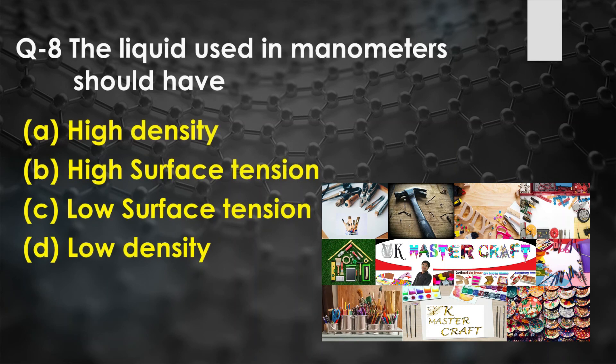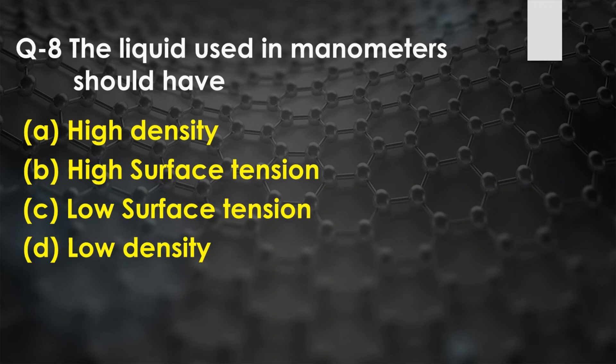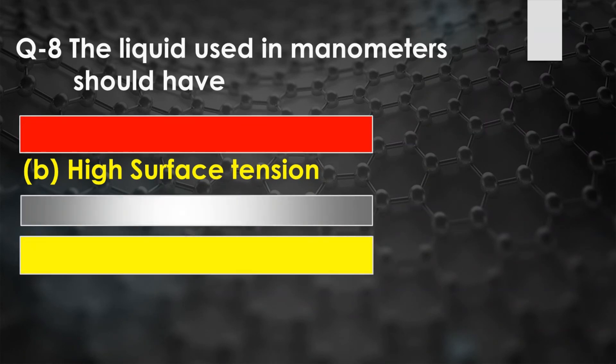Question number eight: The liquid used in a manometer should have — option A: high density, option B: high surface tension, option C: low surface tension, option D: low density. The liquid used in a manometer should have high surface tension. The right answer is option B.